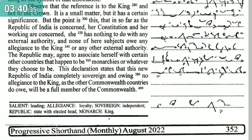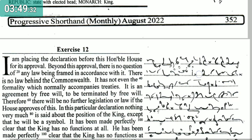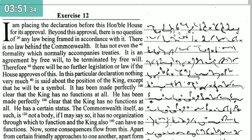This declaration states that this new Republic of India, completely sovereign and owing no allegiance to the King as the other Commonwealth countries do owe, will be a full member of the Commonwealth. I am placing the declaration before this honourable House for its approval. Beyond this approval, there is no question of any law being framed in accordance with it.